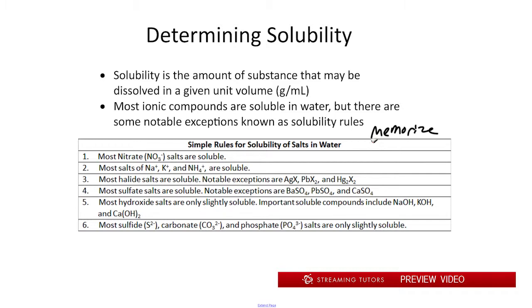In rule three, we get into some exceptions. Most halide salts are soluble except when we have a halide combined with silver, lead, or mercury. In those cases, those halides are insoluble. That's why we saw that PbI2 was insoluble. The fourth rule is that most sulfate salts are soluble with the exception of those paired with barium, lead, and calcium.